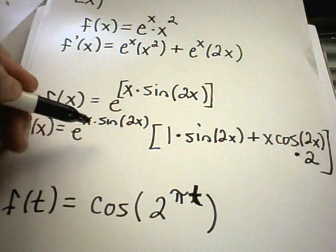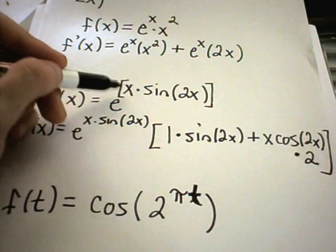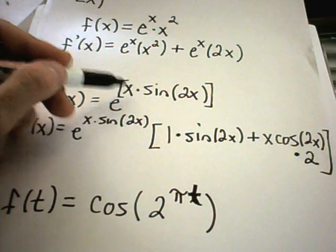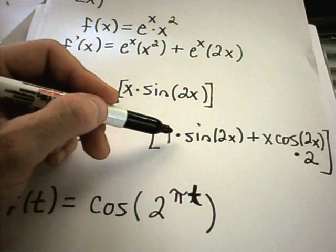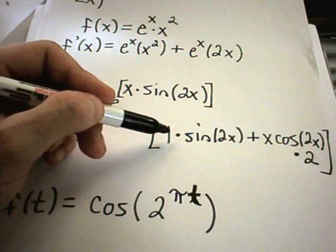And that would be the derivative. So again, you get e to the stuff times the derivative of the stuff. But I have to remember when I take the derivative of that stuff, I'm going to have to go back to my old, still product rule and chain rule.